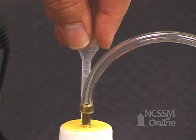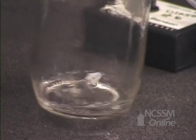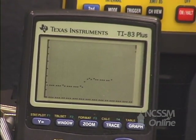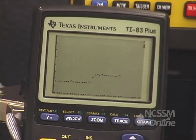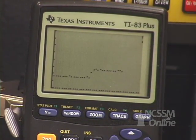We will then squeeze the bulb and inject all the methanol. We'll swirl this a little bit to help the methanol evaporate. The pressure probe is reading the pressure and the increase in pressure due to the evaporation of the methanol.